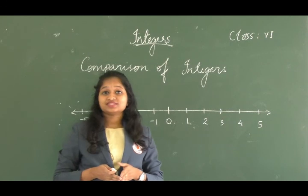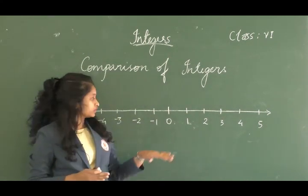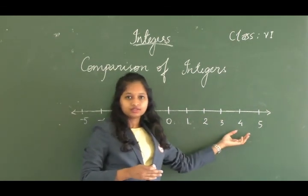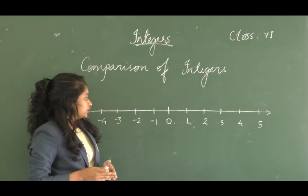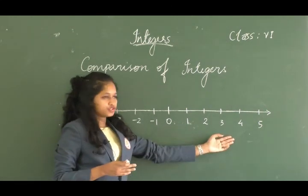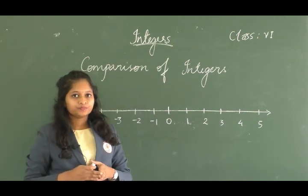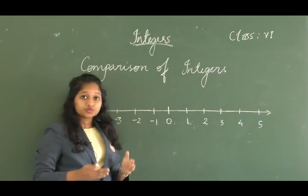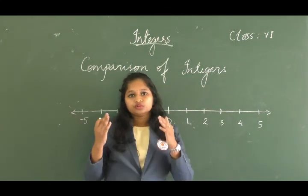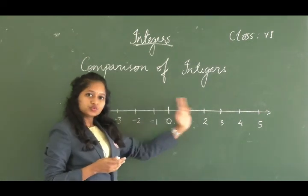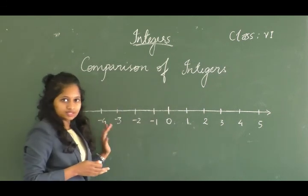Now let us see how to compare integers. Looking at the number line, all positive numbers are greater than negative numbers, and zero is also greater than negative numbers. Numbers towards the right are greater than numbers towards the left.